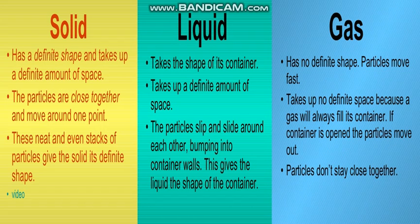Matter can be in solid form, in liquid form, or in the form of a gas. A rock, table, chair, bed, wall, and fan are all solids. Water and juice are liquids. Oxygen and carbon dioxide are gases, and many other gases are present around us. These three are the states of matter.